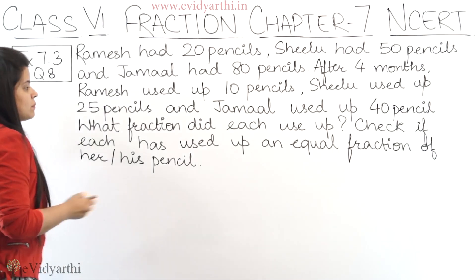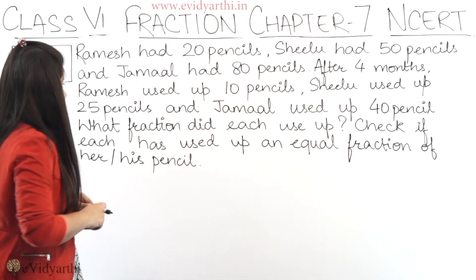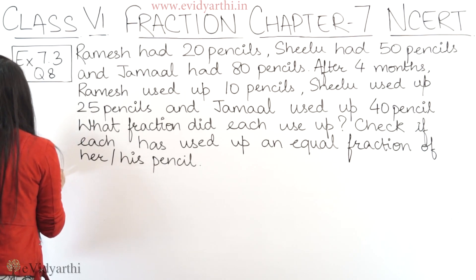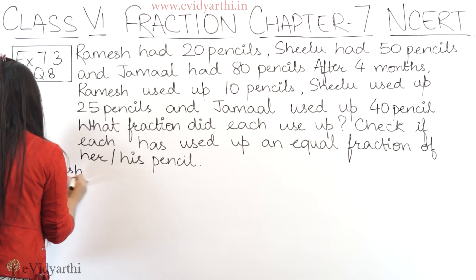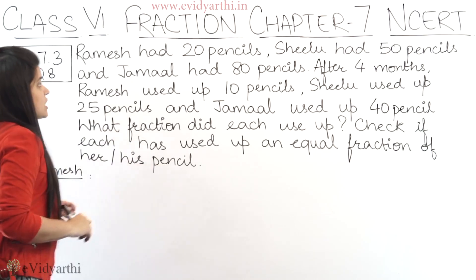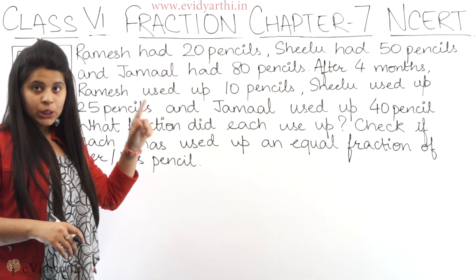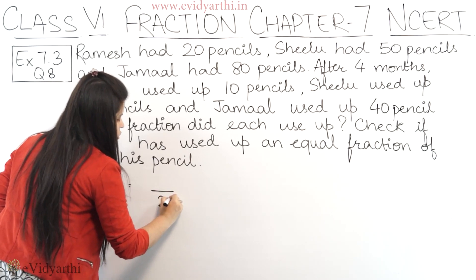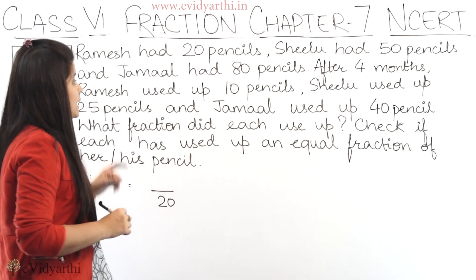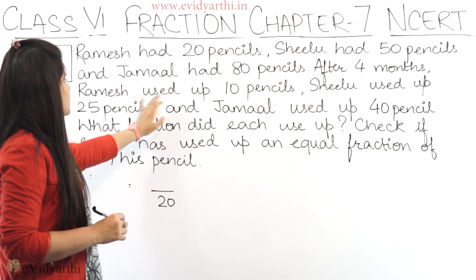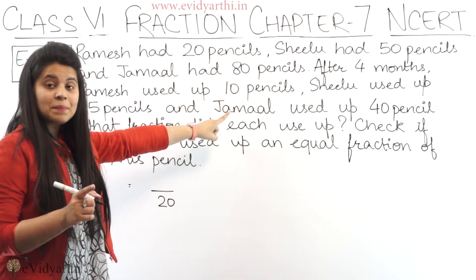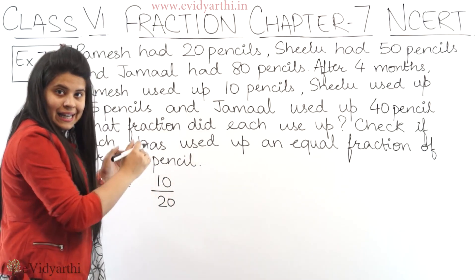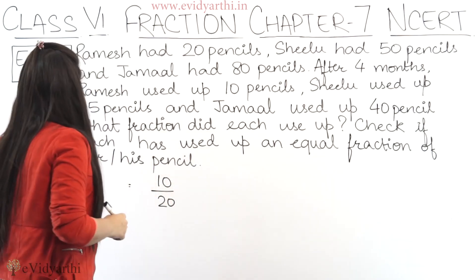So we begin by finding the used-up fraction for each person. First we have Ramesh. Ramesh's total pencils were 20, so the denominator is 20. From those 20 pencils, Ramesh used 10 pencils. So the fraction will be 10 upon 20.